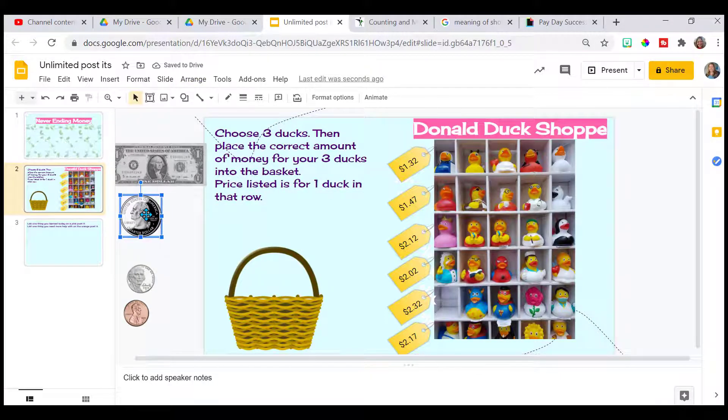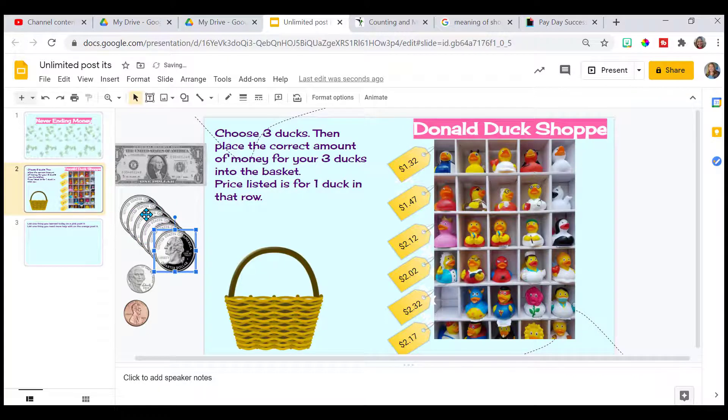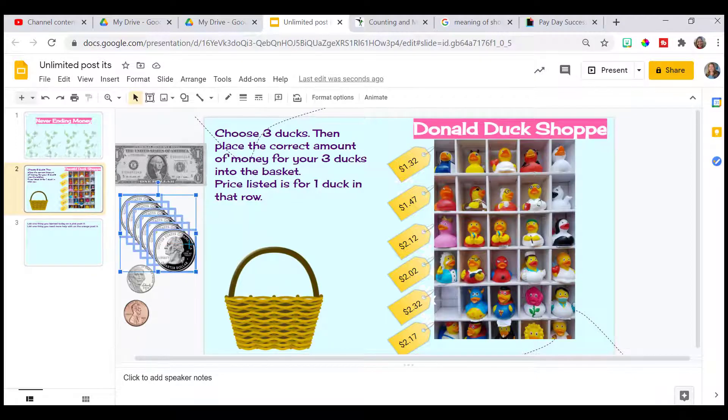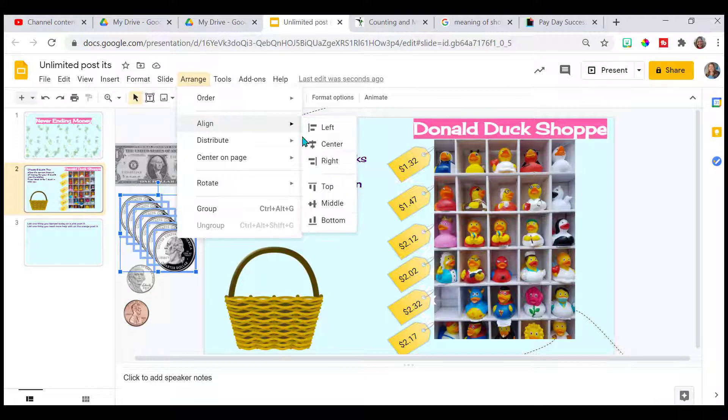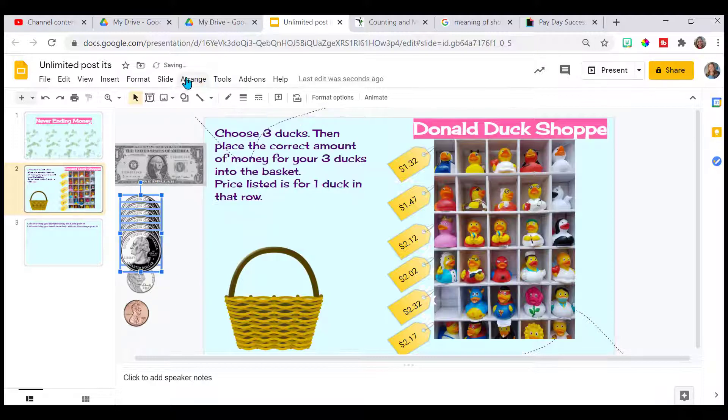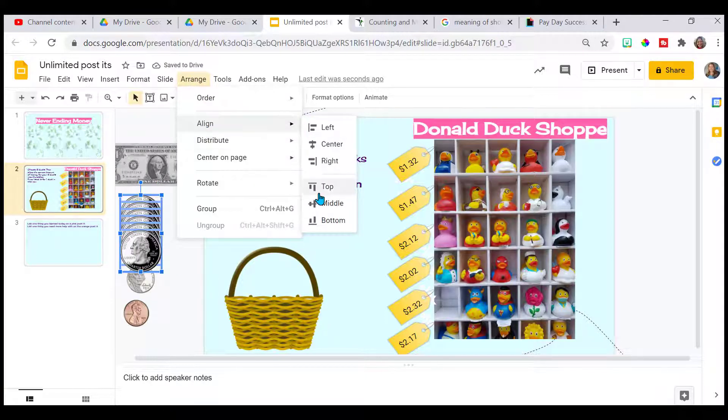And now I have a nice little stack, but there's only five, but they're all still highlighted. So I'm going to just press Control D. I did it five more times. So now I'm up to 25 quarters. If you want more, you can do more. I'm highlighting them. Go to align, left, arrange, align, top.